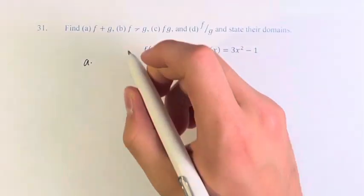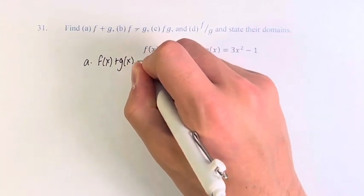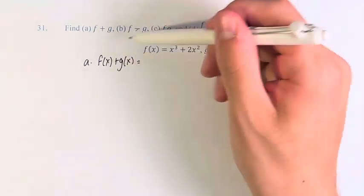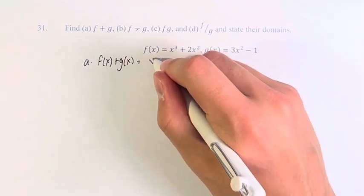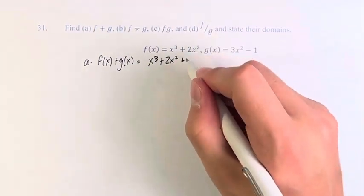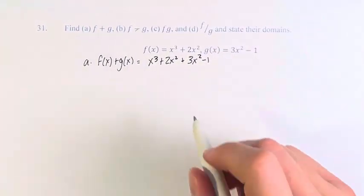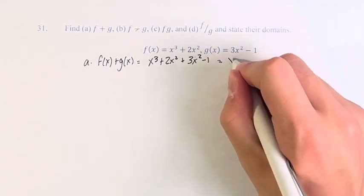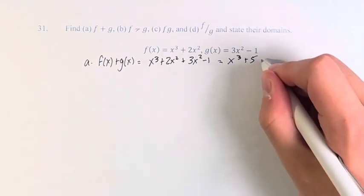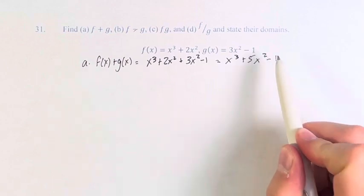So, starting with f plus g, f of x plus g of x. With all of these, all you have to do is plug in what they're equal to. So we have x cubed plus 2x squared plus 3x squared minus 1. Now, adding like terms, 2 plus 3 means this is plus 5x squared. Everything else stays the same. So we have x cubed plus 5x squared minus 1.